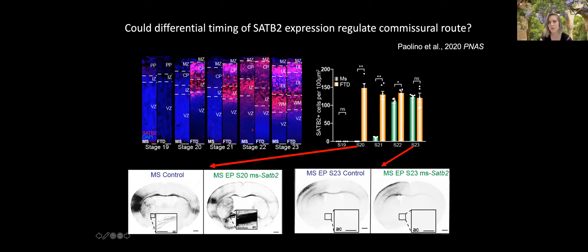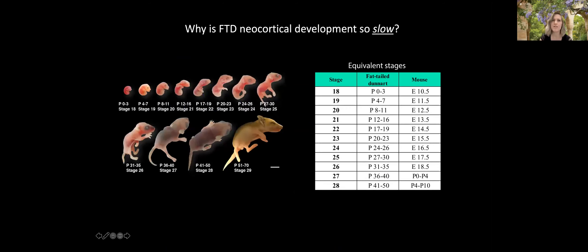That concludes the SATB2 heterochrony work, demonstrating how simple changes in the timing of an otherwise conserved transcription factor network might crucially underlie complex evolutionary phenotypes such as the emergence of the corpus callosum. I now want to mention a few ongoing projects around timing, focusing on two contrasting questions. The first: why is fat-tailed dunnart neocortical development so slow? One developmental stage in our system takes one day on average in mouse but two or three days in dunnart.